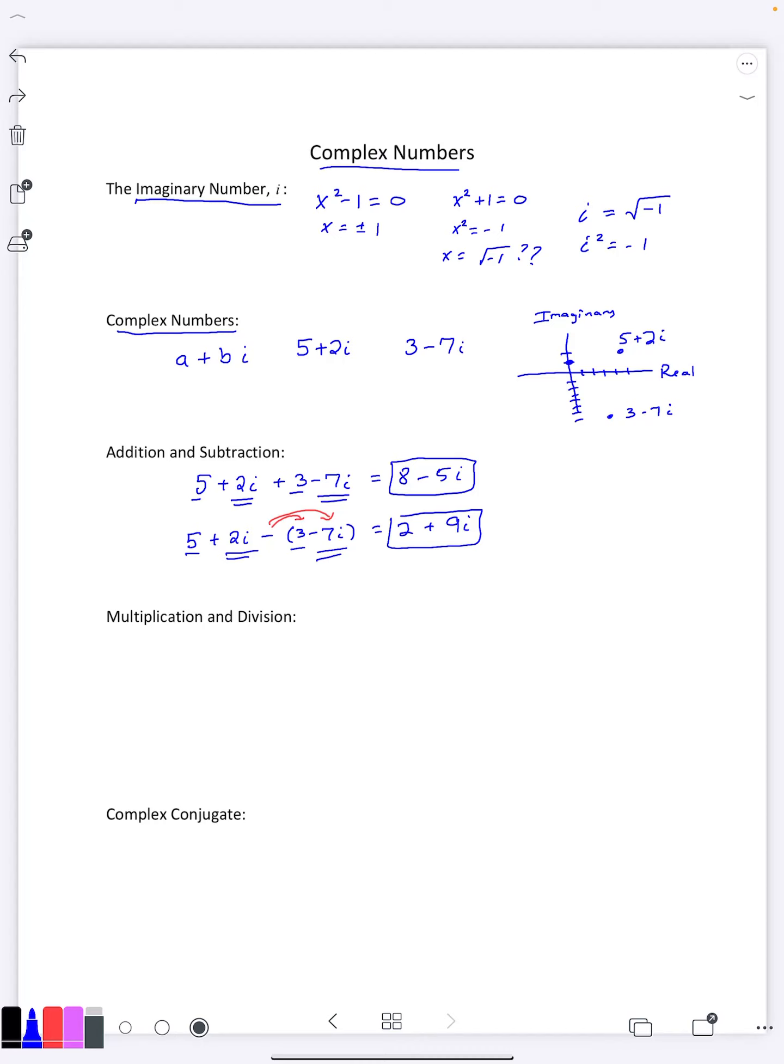We can also multiply them. So if I want to multiply 5 + 2i times 3 - 7i, we would have to FOIL this here. So 5 times 3 is 15. That's F. Outer would be 5 times -7i is -35i. Inner would be 3 times 2i is 6i. And last would be 2i times -7i is a -14i squared.